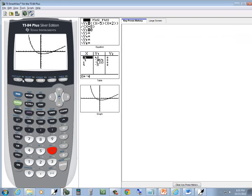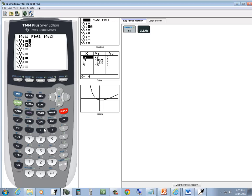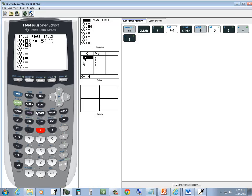So, we got y equals, clear, beginning parentheses, negative x plus 5, closing parentheses, divided by, beginning parentheses, x minus 2, closed parentheses, graph.